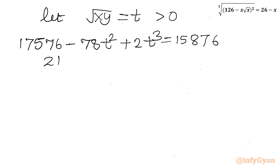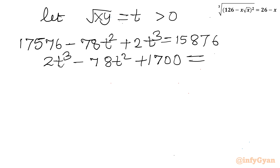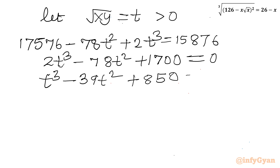Taking all terms to the left-hand side: 2t³ - 78t² + 1700 = 0. Dividing through by 2: t³ - 39t² + 850 = 0.